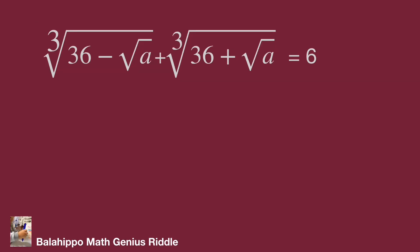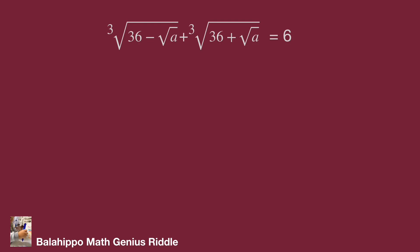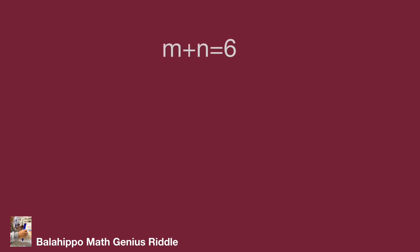In the given equations, there are plus a squared and minus a squared in these two terms. I'm going to find the solution by utilizing plus a squared and minus a squared. So let cube root of 36 minus a squared equal to m, and cube root of 36 plus a squared equal to n. Substituting these two terms by m and n, we get m plus n equals 6.